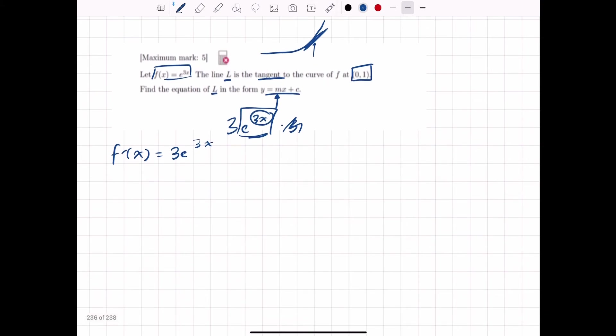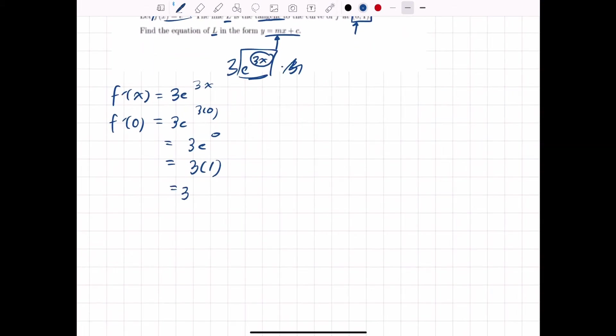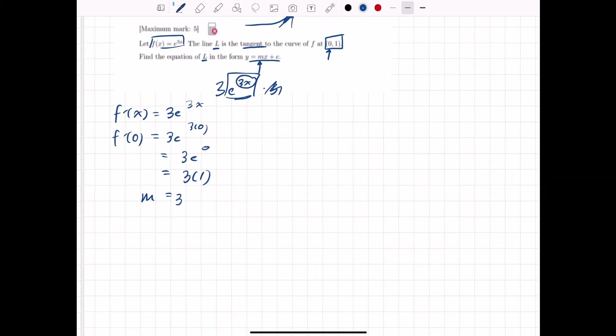So 3e to the 3x. Now that we know what f prime of x is, we need to evaluate it at x equals 0, because that's where our tangent occurs in terms of x. So 3e to the 0. This just gives us 3e to the 0, anything to the 0, just 1, which means our slope at the tangent is 3.